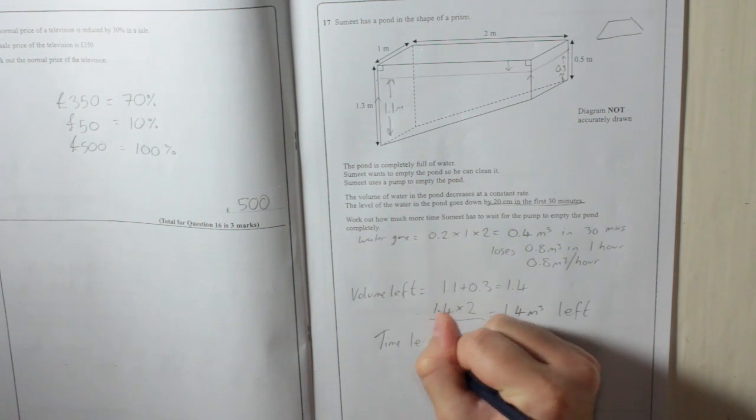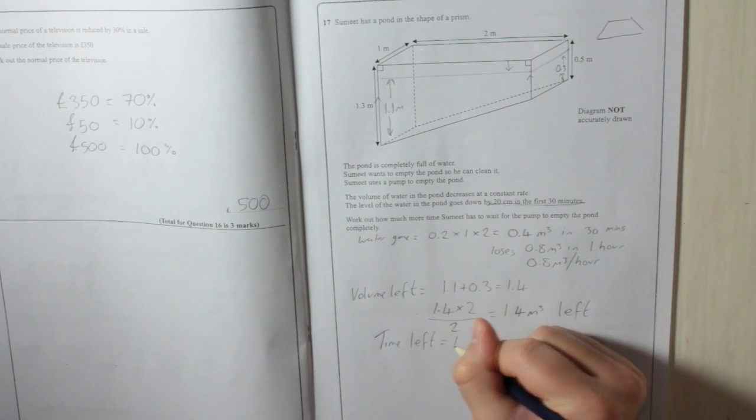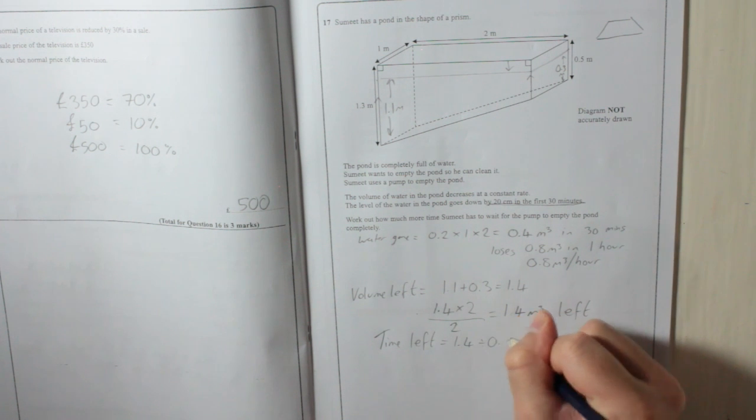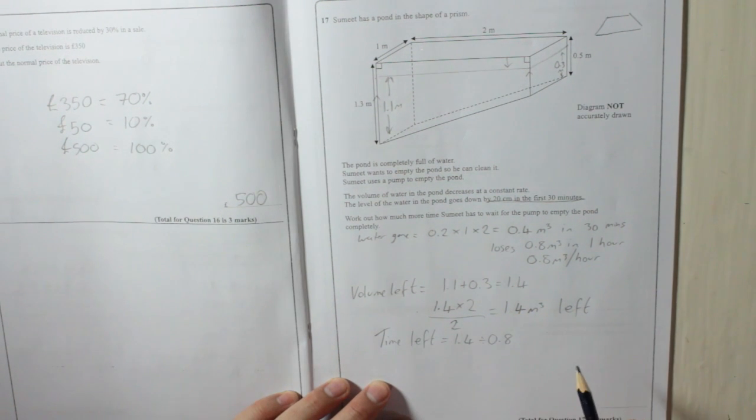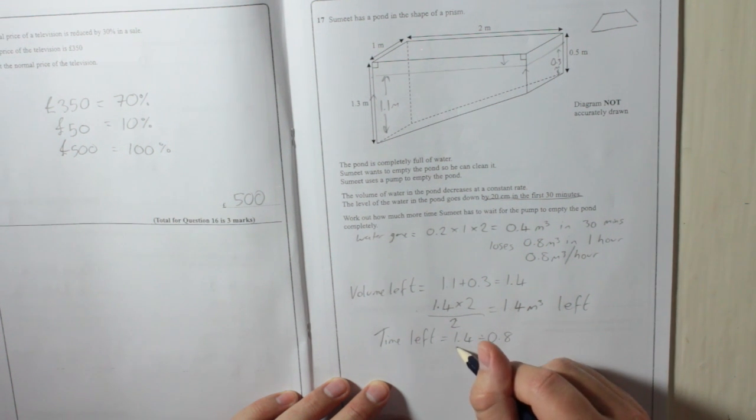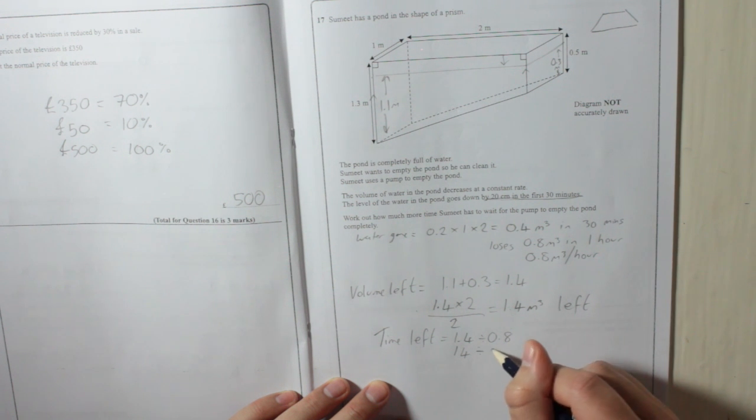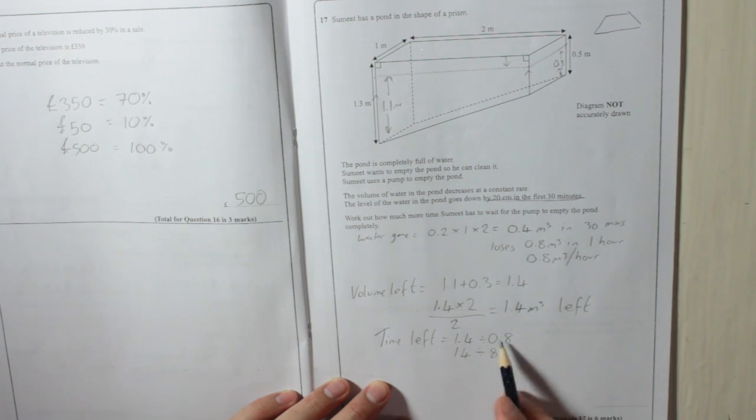Time left equals 1.4 divided by 0.8. It's probably easier if you realize that 1.4 divided by 0.8 is exactly the same as 14 divided by 8. If you multiply both of the numbers by the same amount, you'll get the same answer at the end.